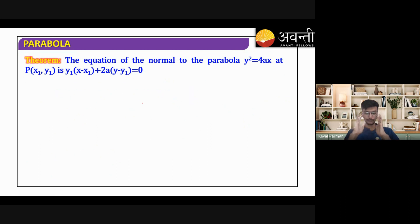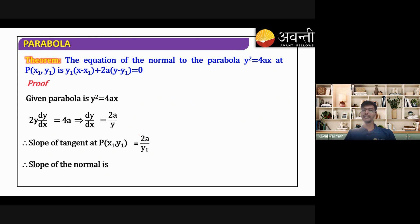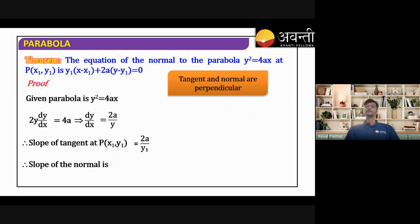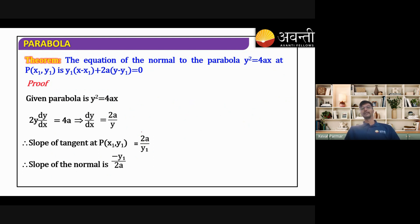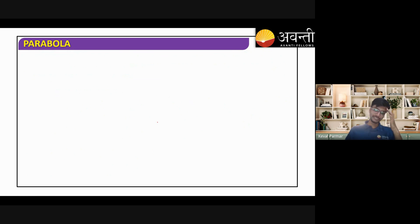Normal is also a straight line so we again use slope-point form. From y² = 4ax, differentiating gives the slope of the tangent as 2a/y₁. Since normal is perpendicular to the tangent, the slope of the normal is −y₁/(2a), because the product of slopes of perpendicular lines equals −1. Now using slope-point form we get the equation of the normal.